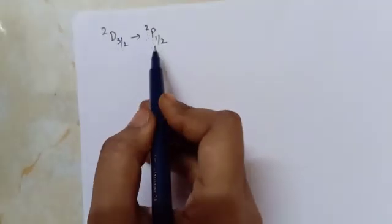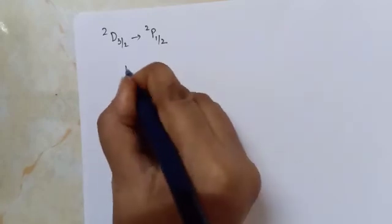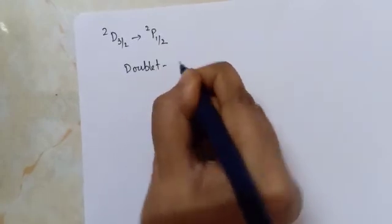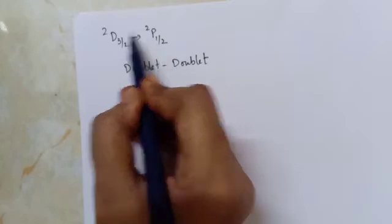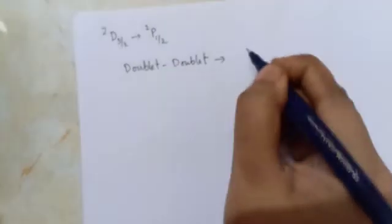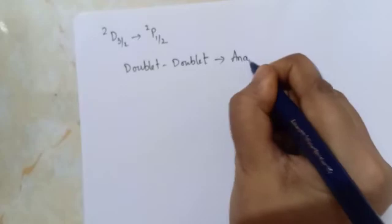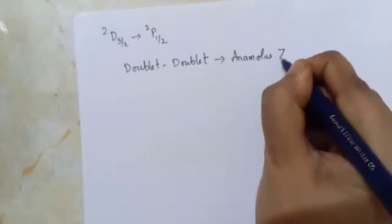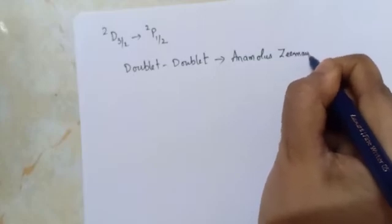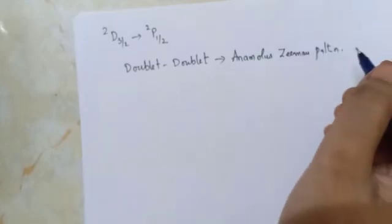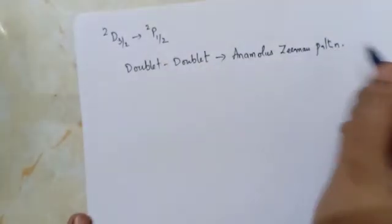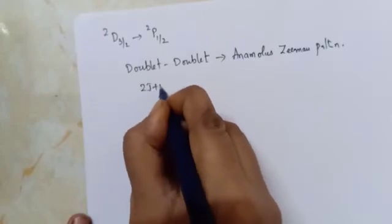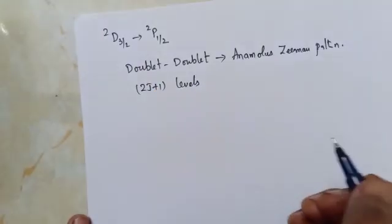Next, we consider the transition 2D3/2 to 2P1/2. This is a doublet-doublet transition because the 2S+1 value is 2. A doublet-doublet transition gives us the anomalous Zeeman effect, and in the anomalous Zeeman pattern, a single spectral line splits into 2J+1 levels.